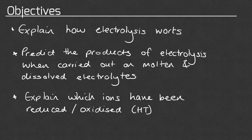So let's review what we've covered: we've explained how electrolysis works, what the electrolyte is, and what the electrodes are called. We've predicted the products of electrolysis when carried out in molten conditions and when carried out in aqueous conditions. We've also looked at which ions will have been reduced or oxidised — but remember, you only need to do that part if you're sitting the higher tier paper.